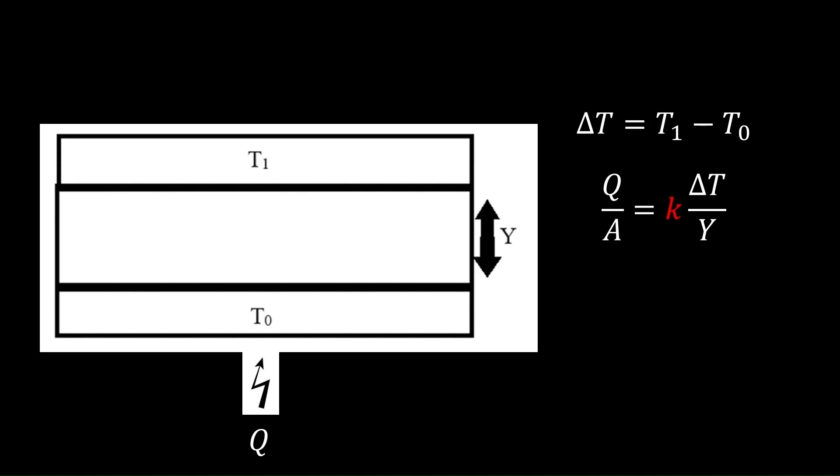The proportionality constant K is the material-dependent thermal conductivity of the slab, where a high K means the material is a better conductor, like metal as we discussed before. In its differential form, we derive the one-dimensional form of Fourier's law of heat conduction, where dT is the temperature difference, dx is the thickness of the slab, and Q is the heat flux.